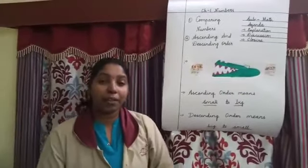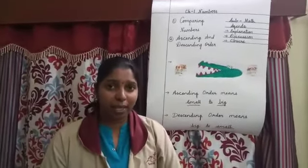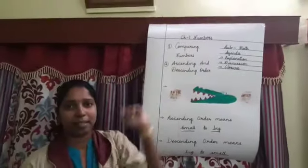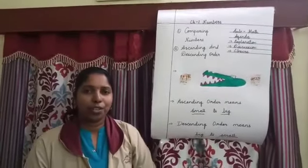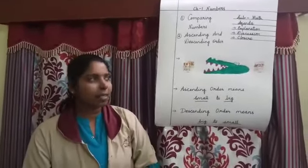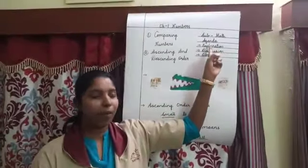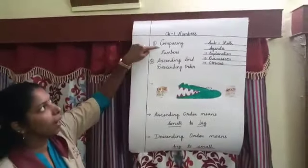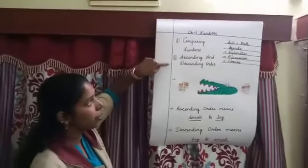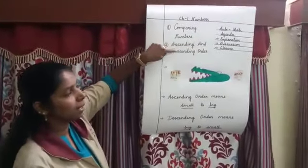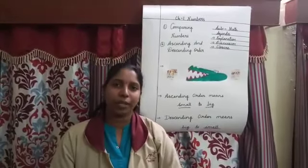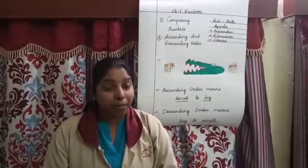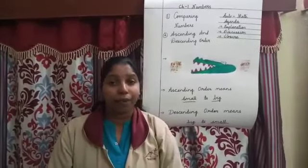Ok children, can you tell me which chapter are we learning? That's correct, we are learning Chapter 1: Numbers. Good children. So today's agenda is: I am going to explain, we will have discussion and closure. Number 1 is comparing numbers and number 2 is ascending and descending order. These 2 things you are going to learn today. So, once again, I request all the children to be very attentive and listen carefully and learn.